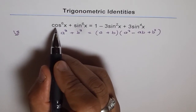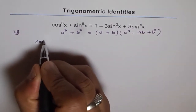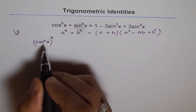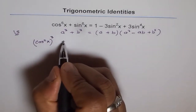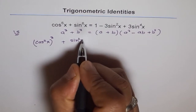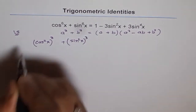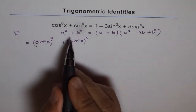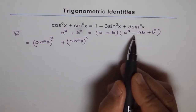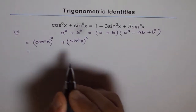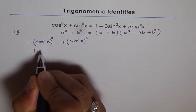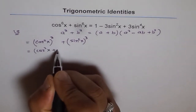I am going to write this as cos square x cubed. When I write cos square x cubed, it is cos to the power of 6x. Similarly, I will write sin to the power of 6x as sin square x cubed. Now I will use the formula a cube plus b cube, which is a plus b times a square minus ab plus b square. So this is equal to a plus b, where a is cos square x and b is sin square x, giving cos square x plus sin square x.